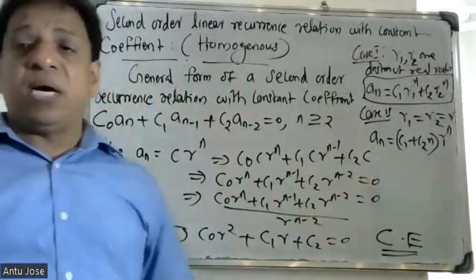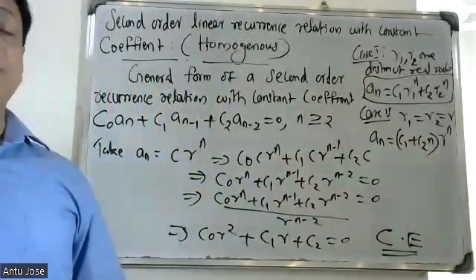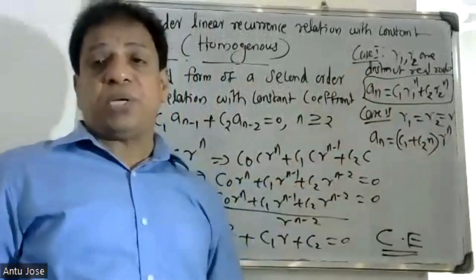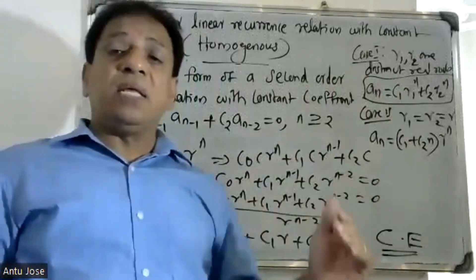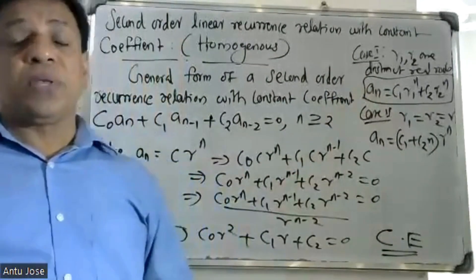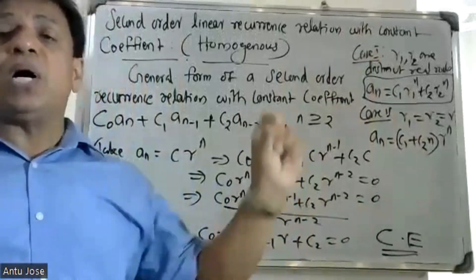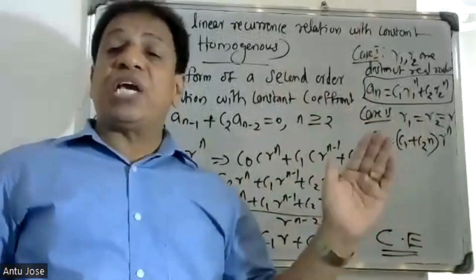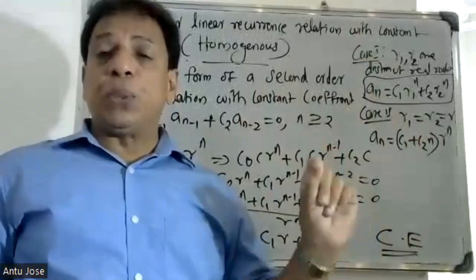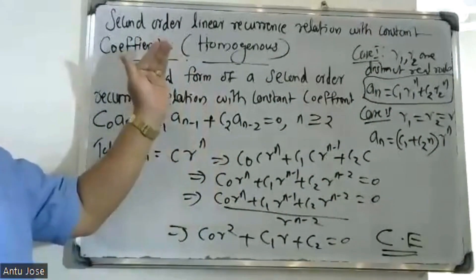Case 2: r₁ = r₂, that is, the roots are repeating. When r₁ = r₂ = r, the general solution is: aₙ = (c₁ + c₂·n)·r^n. The constants c₁ and c₂ are determined from the boundary conditions.